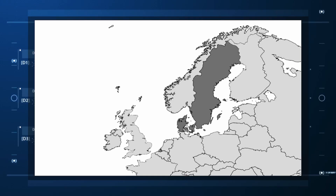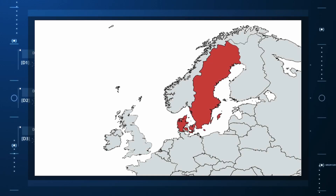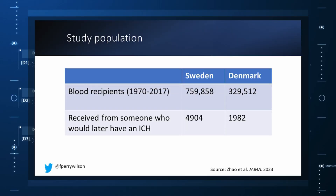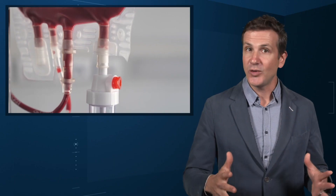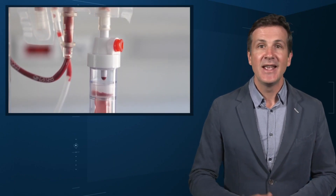No one has that kind of data, right? Well, if you've been watching this space, you'll know that a few countries do. Enter Sweden and Denmark with their national electronic health records that capture all this information — and much more — on every single person who lives or has lived in those countries since before 1970. Unbelievable. So that's exactly what the researchers, led by Jing Chen Zhao at Karolinska University, did. They identified roughly 760,000 individuals in Sweden and 330,000 people in Denmark who had received a blood transfusion between 1970 and 2017.